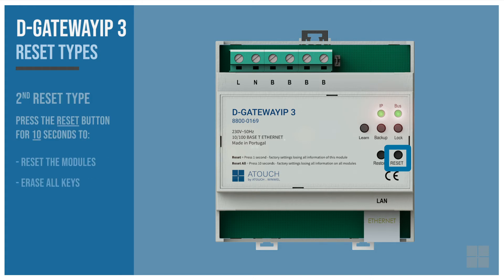Press the reset button for 10 seconds to return all installed modules to factory default, except the D-Gateway IP. This action erases all keys assigned to the devices. After this action, we must assign all the keys again.